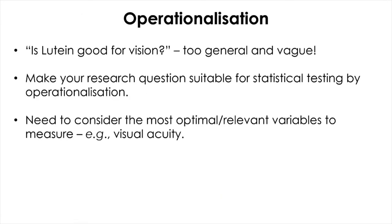If you think about the research question again — 'is lutein good for vision?' — it sounds too general for practical investigation and does not capture what we want to do to test the hypothesis. You probably remember I briefly mentioned operationalization before. If we go back to this question — 'is lutein good for vision?' — what do we mean by good or bad? What do we mean by vision? Is it something measurable at all?